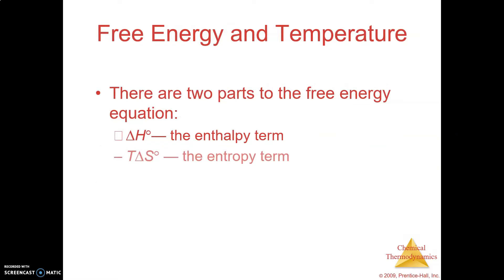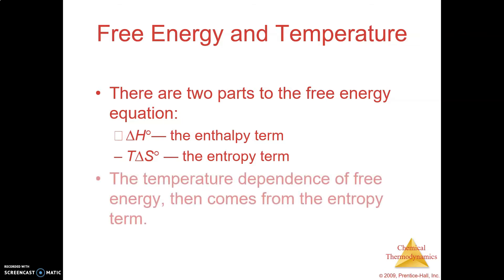There are two parts to the equation — the enthalpy term and the entropy term. Practice questions will ask you whether enthalpy or entropy is playing more of a role in the spontaneity of the process. So we have to look at which term — the enthalpy term or the entropy term — is controlling the sign on delta G from our equation. Make sure you know which term they're talking about. The temperature dependence comes from the entropy term.